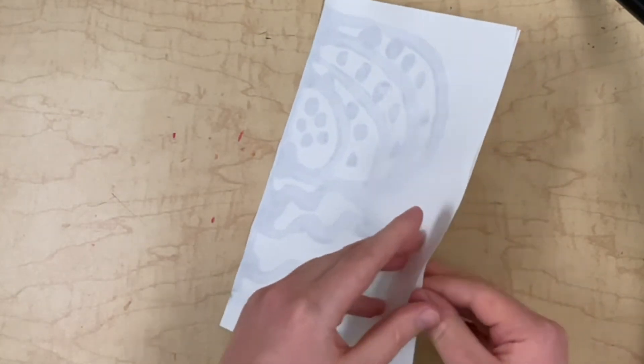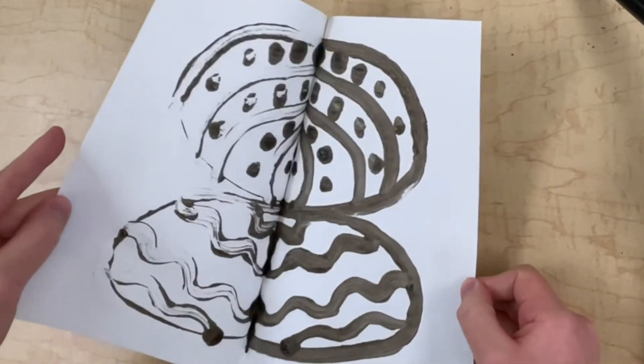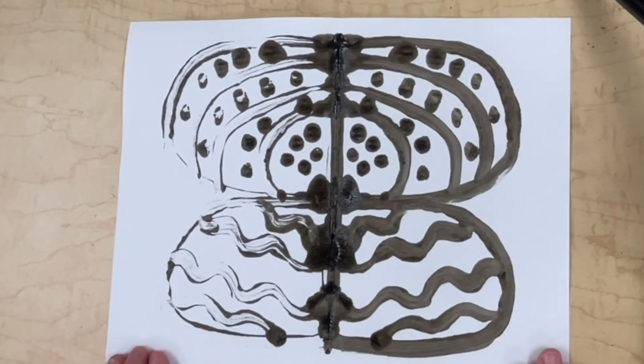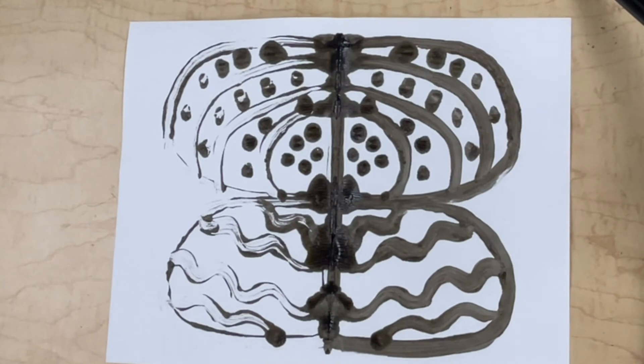I'm ready to very carefully open up my paper again. And here is my symmetrical butterfly monoprint. You can see it's the same on both sides. When it dries, next time we'll add some color and more details to the butterfly.